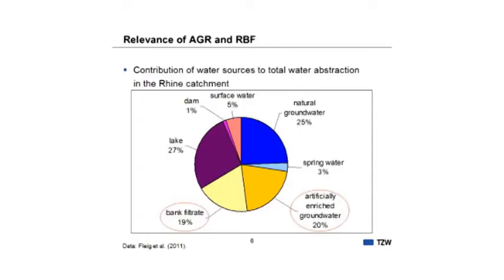Some words about the relevance of both systems in the Rhine catchment. In a recent study we investigated the importance of several water sources to the total water abstraction. In the Rhine catchment, mainly surface water is used — for example, lake water — but also bank filtrate and artificially recharged groundwater, each contributing approximately 20%.